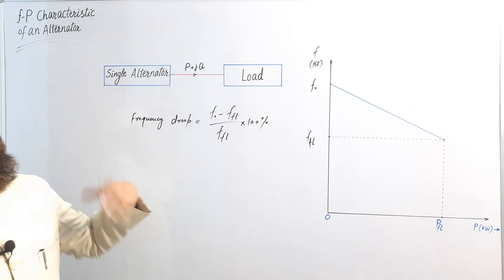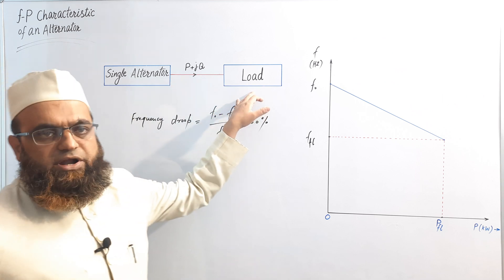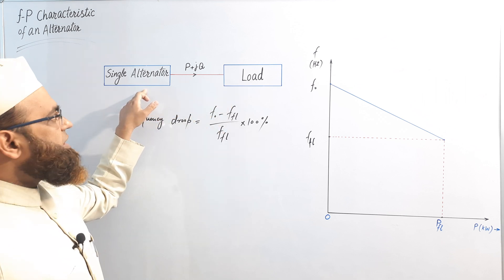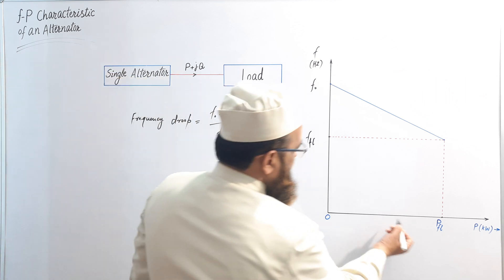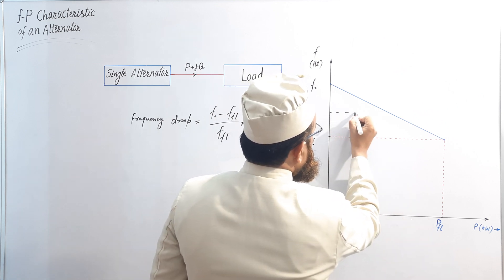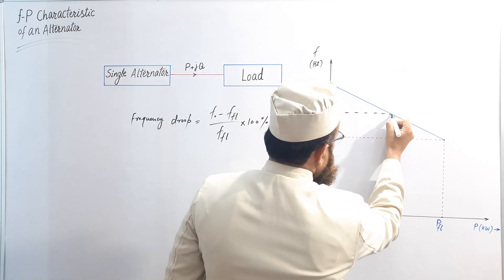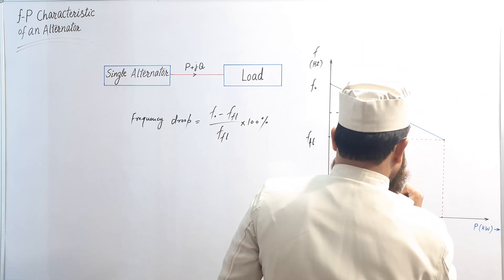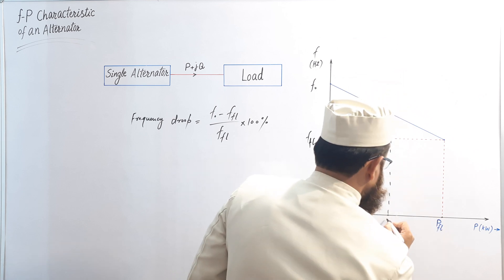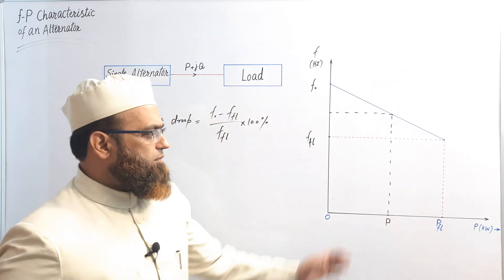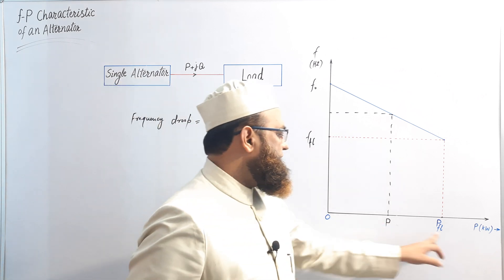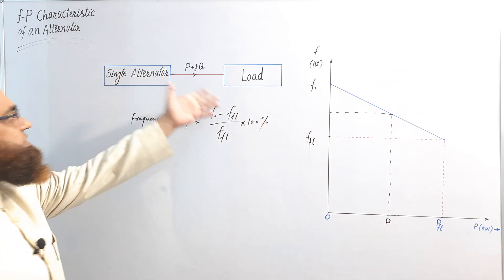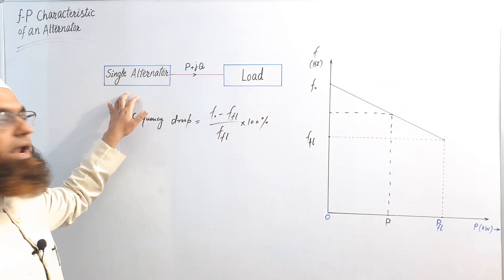At any moment, the active power demand that must be supplied by the alternator is marked as P, which lies somewhere on the FP curve. This P varies between zero and the maximum limit Pfl — full-load active power.